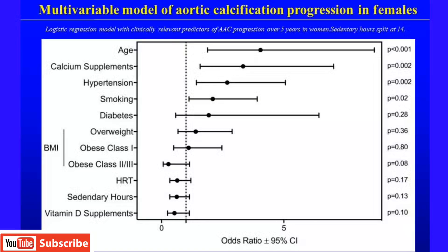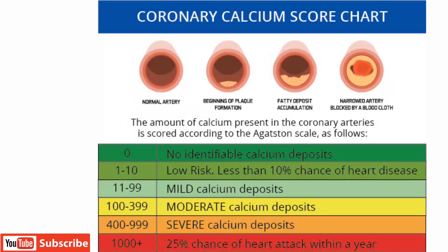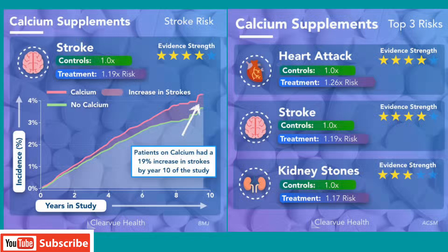In this graph we can see that calcium supplementation is strongly correlated with aortic calcification. Apart from age, smoking, hypertension, diabetes, and overweight, calcium supplementation is the second leading cause of aortic calcification. The coronary calcium score, done by CT angiogram, records calcium present in coronary arteries on the Agatston scale and can predict future chances of heart attacks. Calcium supplementation increases the chance of stroke by about 19%, and also increases the risk of heart attacks, kidney stones, and gallstones.